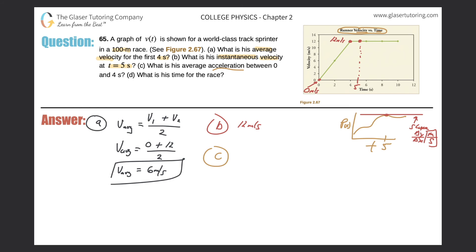Acceleration is equal to velocity over time. Let's compare that to the formula of slope, which is change in y over change in x. For this particular graph, the units of y are meters per second.